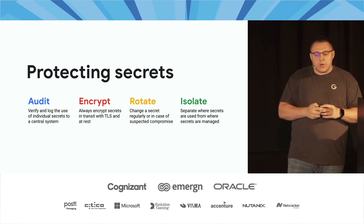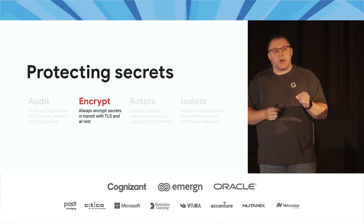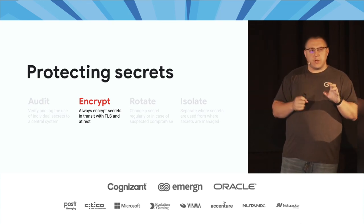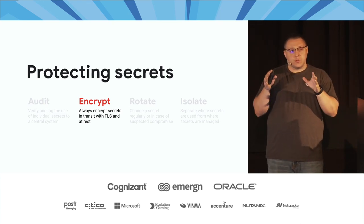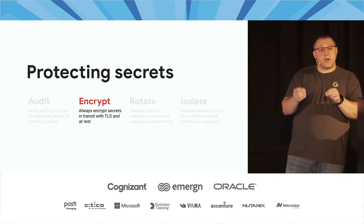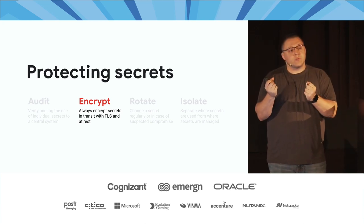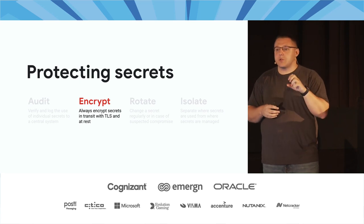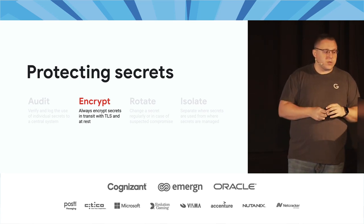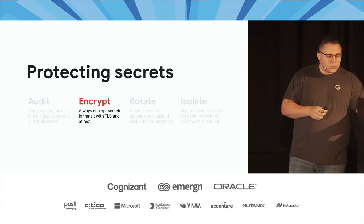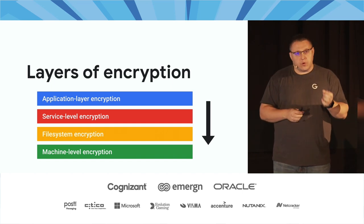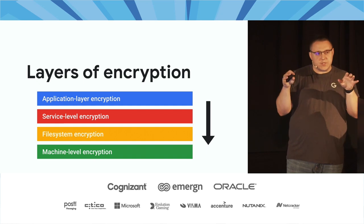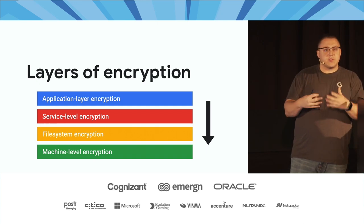The one I want to zoom in on specifically when talking about Kubernetes is encryption. We should always encrypt our secrets in two places: in transit while they're moving between systems, and at rest when stored on disk, in memory, or in the file system. There are different layers of encryption ranging from specificity to levels of integration.